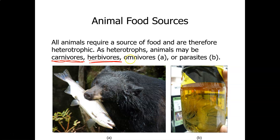Omnivores would be like us, humans. We eat a variety of meat and plant food sources. This bear is an omnivore. It is eating what looks like a salmon or a trout. We know the bear is an omnivore because it also eats plant material, like berries.